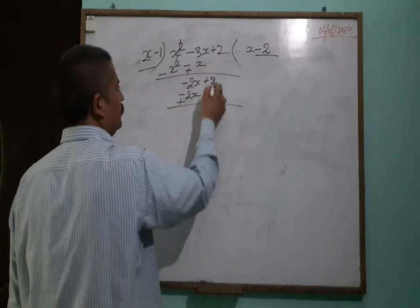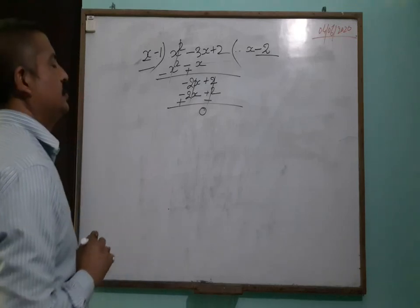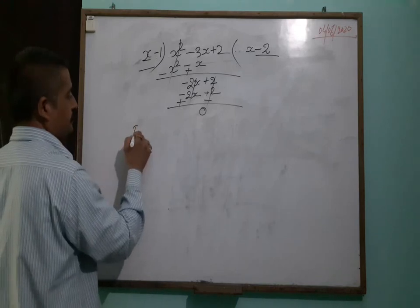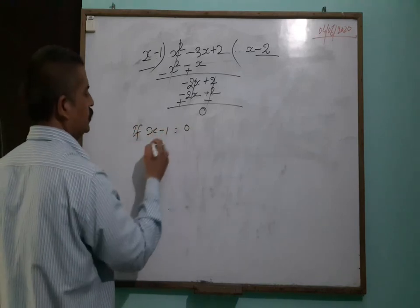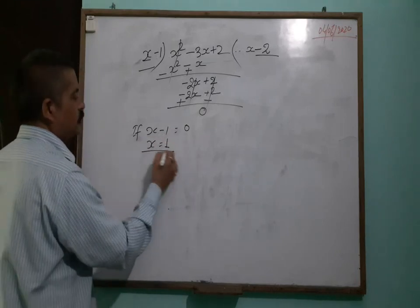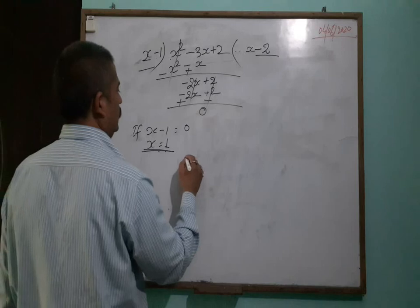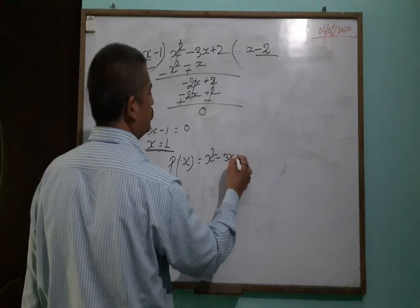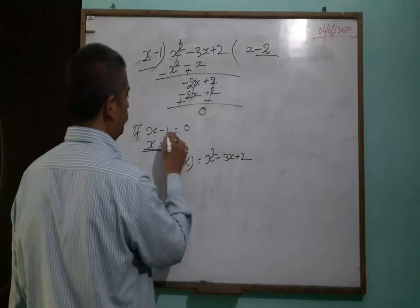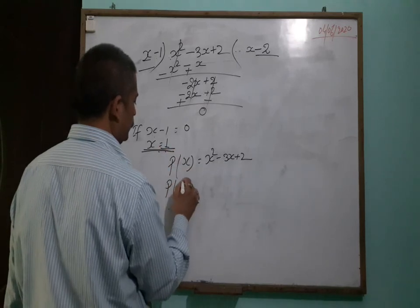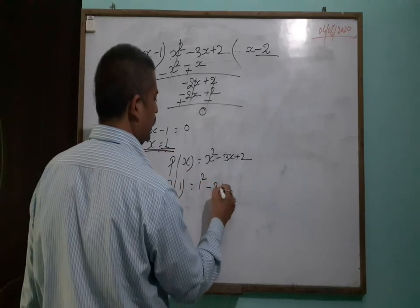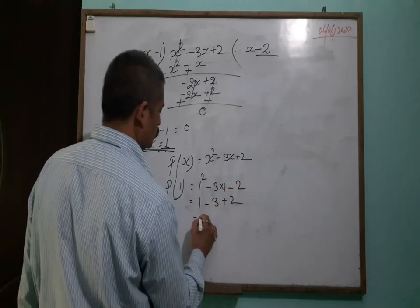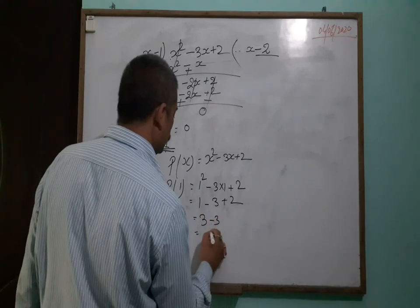So we verify: if x minus 1 equals 0, then x equals 1. If we put the value of 1 into the expression p(x) equals x squared minus 3x plus 2: we get 1 squared minus 3 into 1 plus 2, which is 1 minus 3 plus 2, so 3 minus 3 equals 0. So the remainder is 0, which confirms our answer.